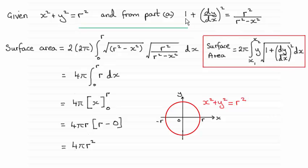Now in the first part, part a, we worked out what 1 plus (dy/dx)² was. It got this result: r² over r² minus x².